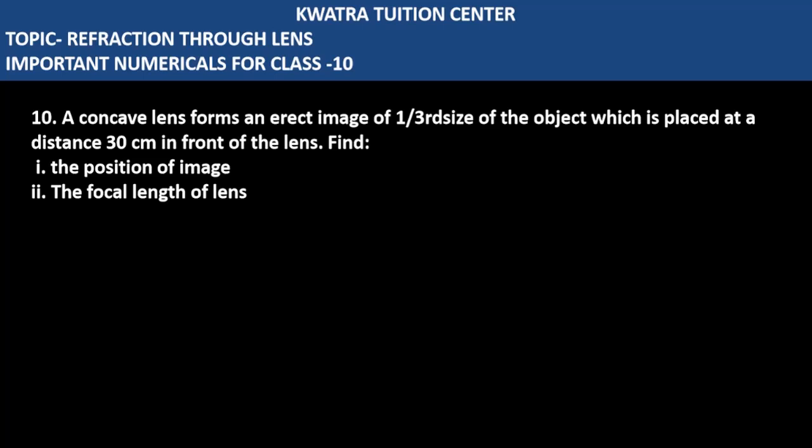Let's start with question number 10. It says a concave lens forms an erect image of 1 by 3rd size of the object which is placed at a distance of 30 cm in front of the lens. Find the position of the image.